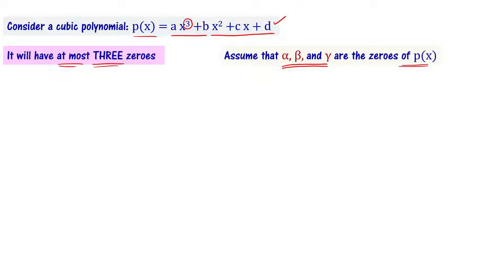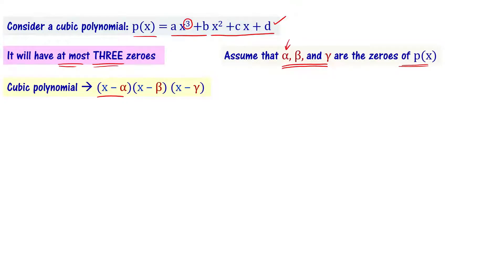For a quadratic polynomial, we have 2 zeros alpha and beta, and the quadratic polynomial is x minus alpha times x minus beta. So for a cubic polynomial, the cubic polynomial is x minus alpha times x minus beta times x minus gamma, because we have three zeros for the given cubic polynomial.